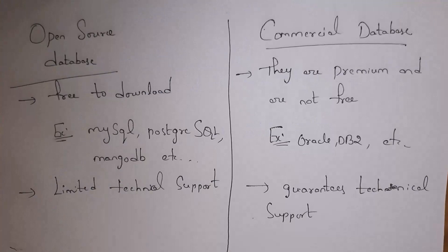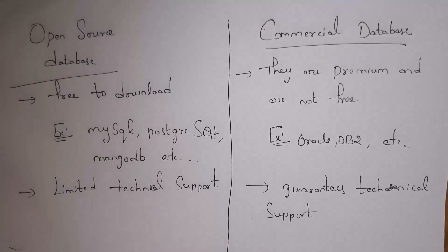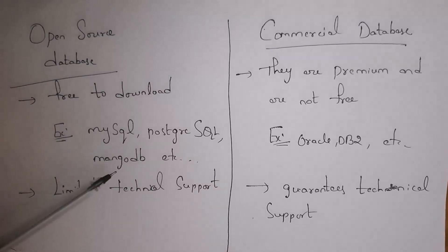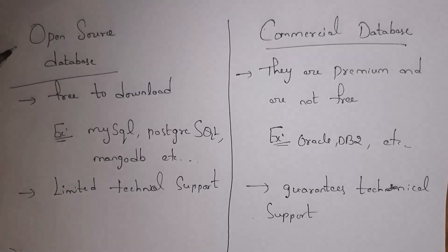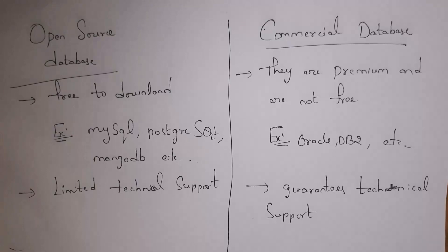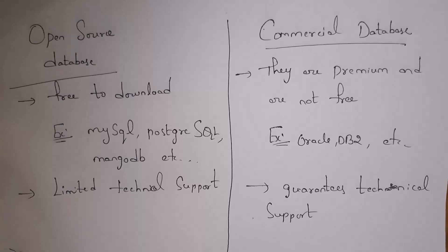An open source database is database software which we can download free of cost from the internet. These open source databases are free to download, whereas commercial databases are premium paid versions. Examples of open source databases are MySQL, PostgreSQL, and MongoDB. Examples of commercial databases are Oracle and DB2. Open source databases are free but provide limited technical support, whereas commercial databases are paid and guarantee technical support. Both provide the same security features.